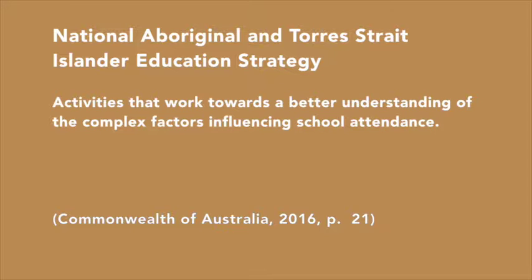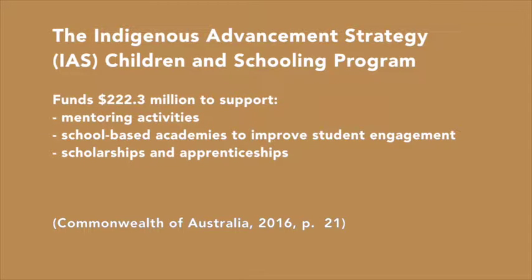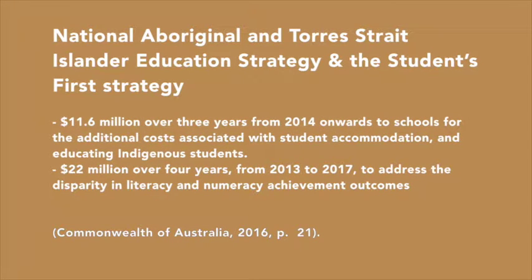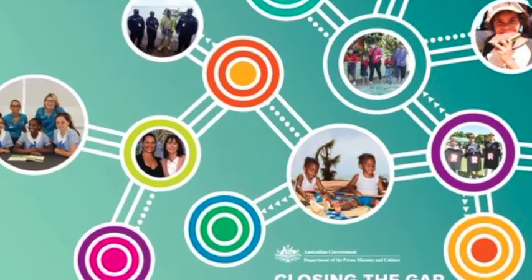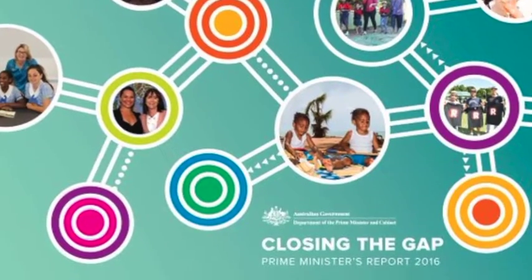The Australian Government outlines these strategies, which include the National Aboriginal and Torres Strait Islander Strategy focused on better understanding complex factors influencing school attendance; the Indigenous Advancement Strategy Children and Schooling Programme, which funds $222.3 million to support mentoring activities, full-time school-based academies and scholarships; the National Aboriginal and Torres Strait Islander Education Strategy providing $11.6 million over three years from 2014 for accommodation and education costs, and $22 million over four years from 2013 to 2017 for literacy and numeracy outcomes, plus $4 million from 2014 to 2018 for the Australian Research Alliance for Children and Youth to develop resources for parental engagement.